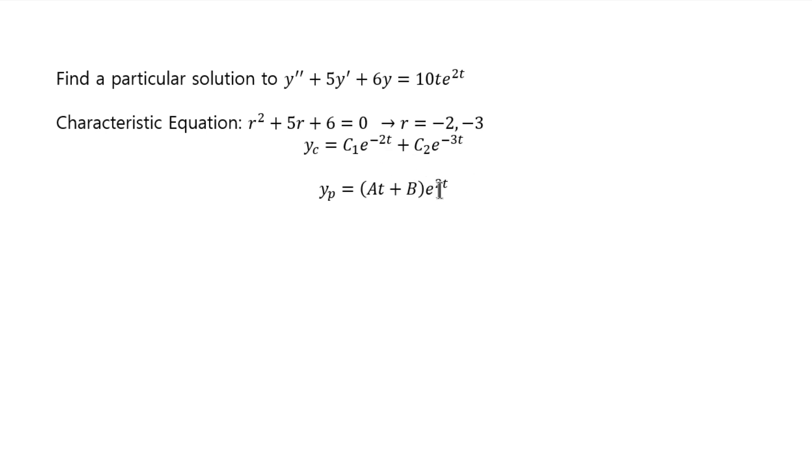So, since e to the 2t is linearly independent from both e to the negative 2t and e to the negative 3t, we see that nothing in the particular solution is duplicated. So there is no duplication. This is good for us because if there was a duplication, then we would have had to multiply by t to the everything, and the derivatives will be a little bit harder when you try to do that.